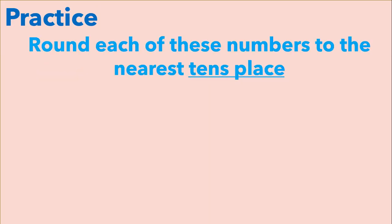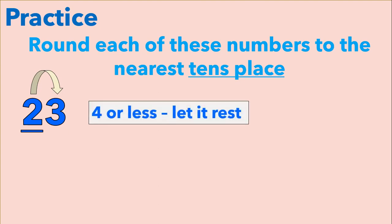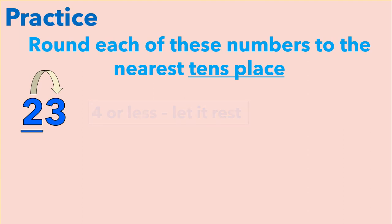Let's try that. Round each of these numbers to the nearest tens place. We are starting with twenty-three. The two is in the tens place, so we're going to look at the three to decide if the two is going to stay the same or round up. Remember, twenty-three falls between twenty and thirty, so our number is either going to round to twenty or thirty. The three is four or less, so we're going to let the two rest, which means twenty-three is going to round to twenty.